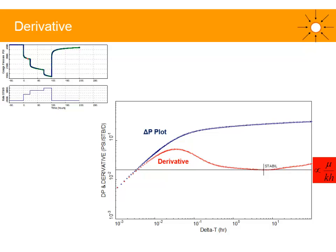Assume you have production wells with production flow periods and one PBU. What you can do is plot the delta P signal — pressure during the PBU minus pressure at time T — in blue, and its derivative in red, or equivalently the derivative of PBU pressure with respect to superposition time.